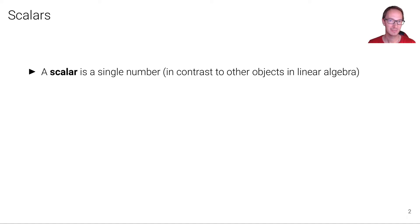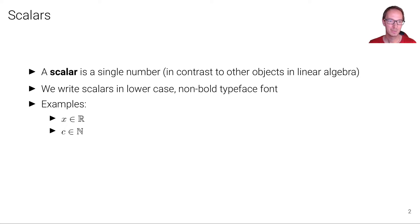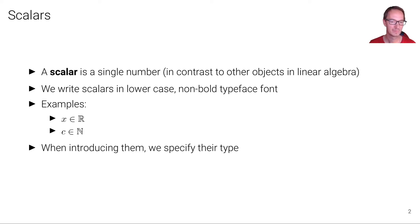Now let's continue with the basic elements of algebra and linear algebra, starting with scalars. A scalar is a single number, in contrast to vectors, matrices, and tensors. We write scalars in lowercase non-bold typeface font. For example, lowercase non-bold x is an element of the real numbers, or lowercase non-bold c is an element of the natural numbers. When introducing scalars, we have to specify their type — we first denote the domain, such as the set of real numbers or the set of natural numbers.